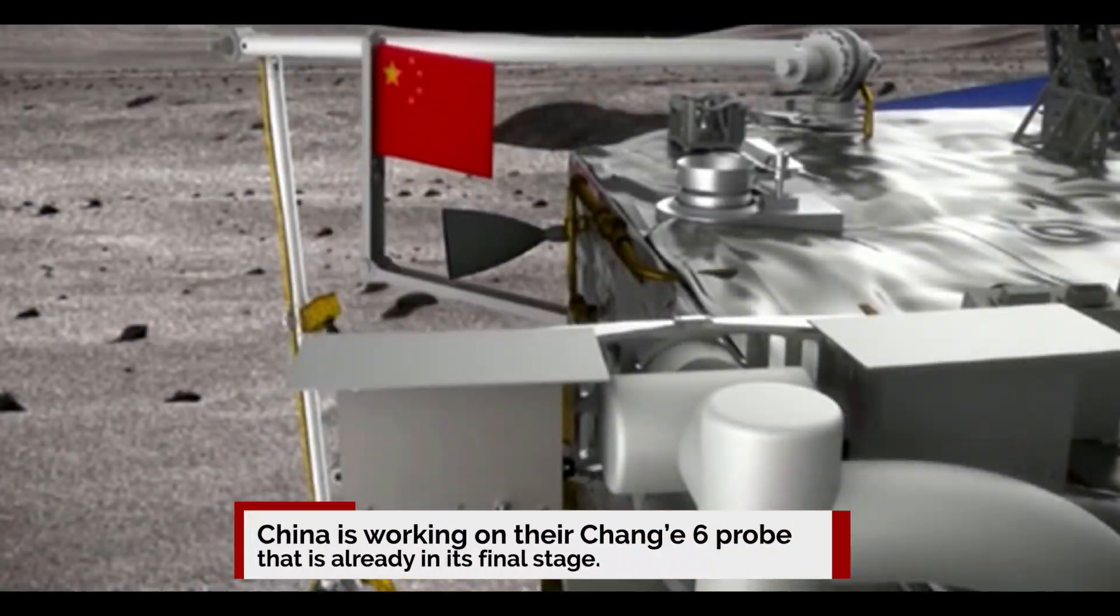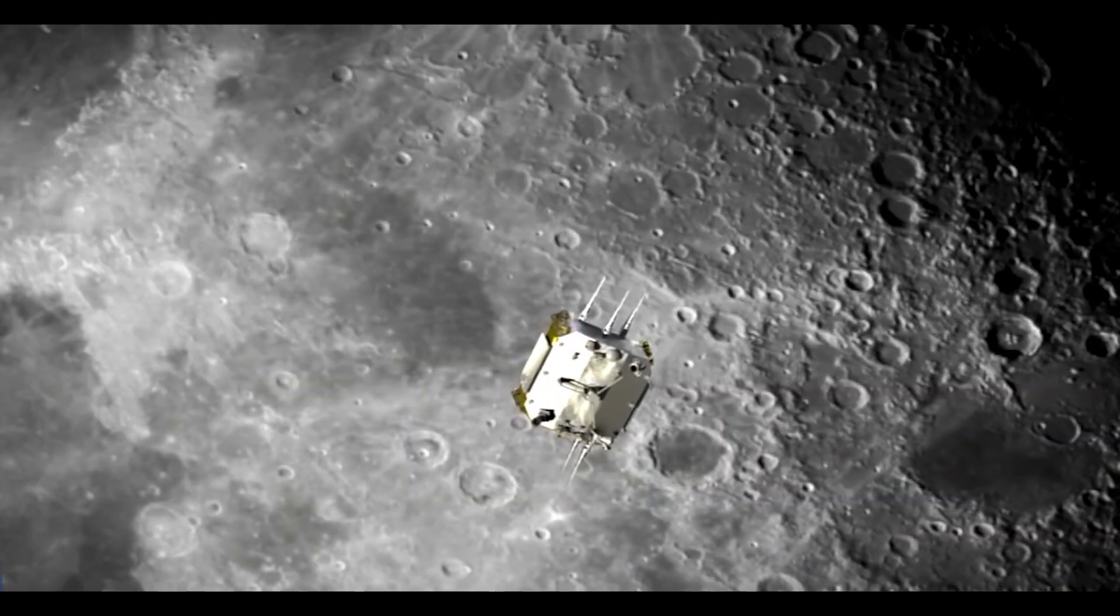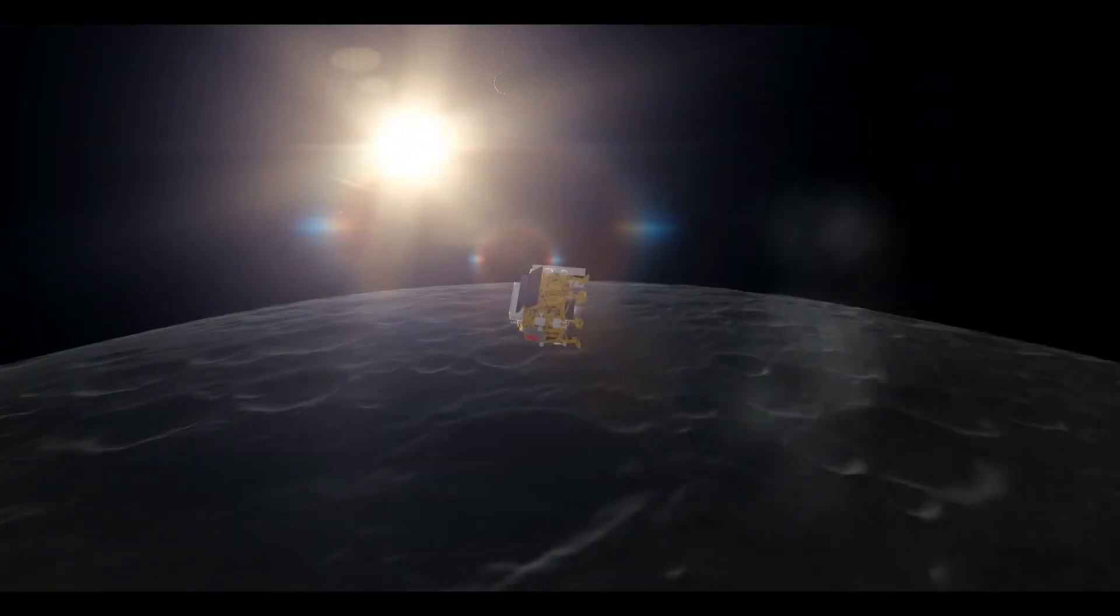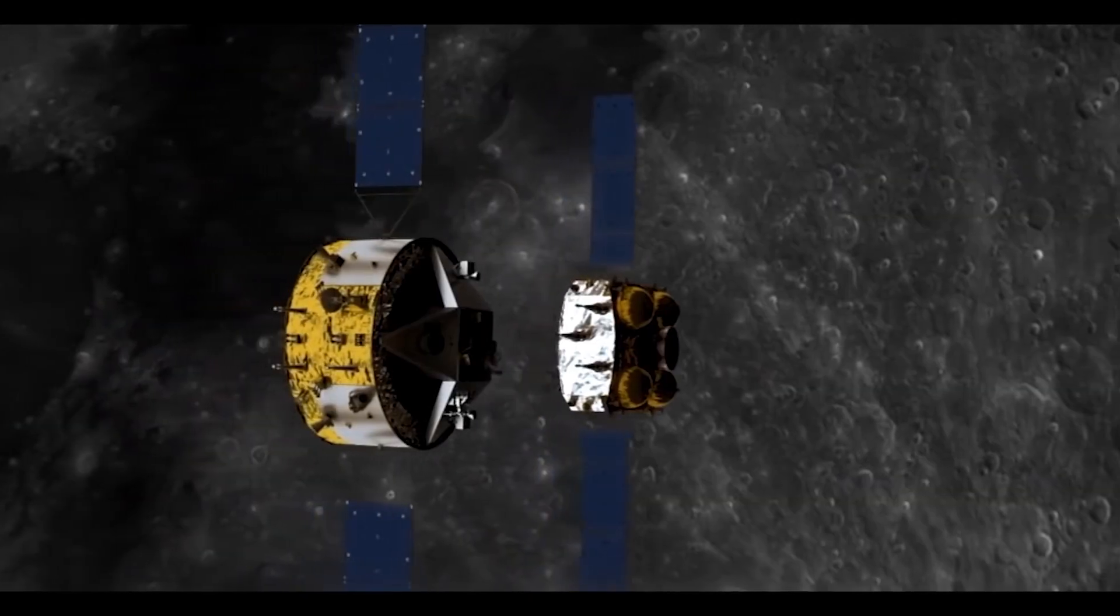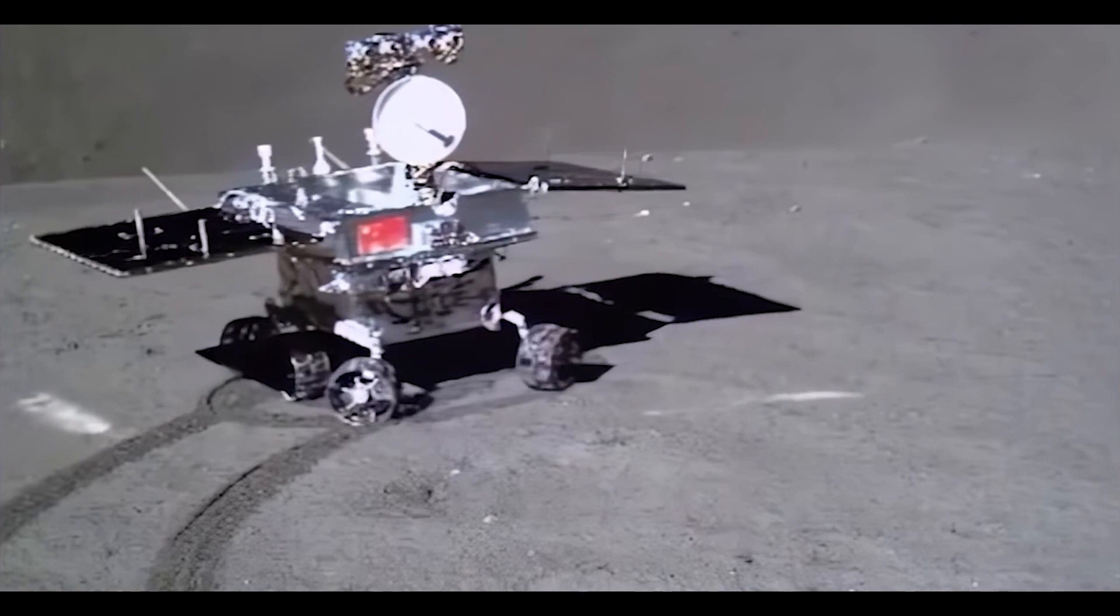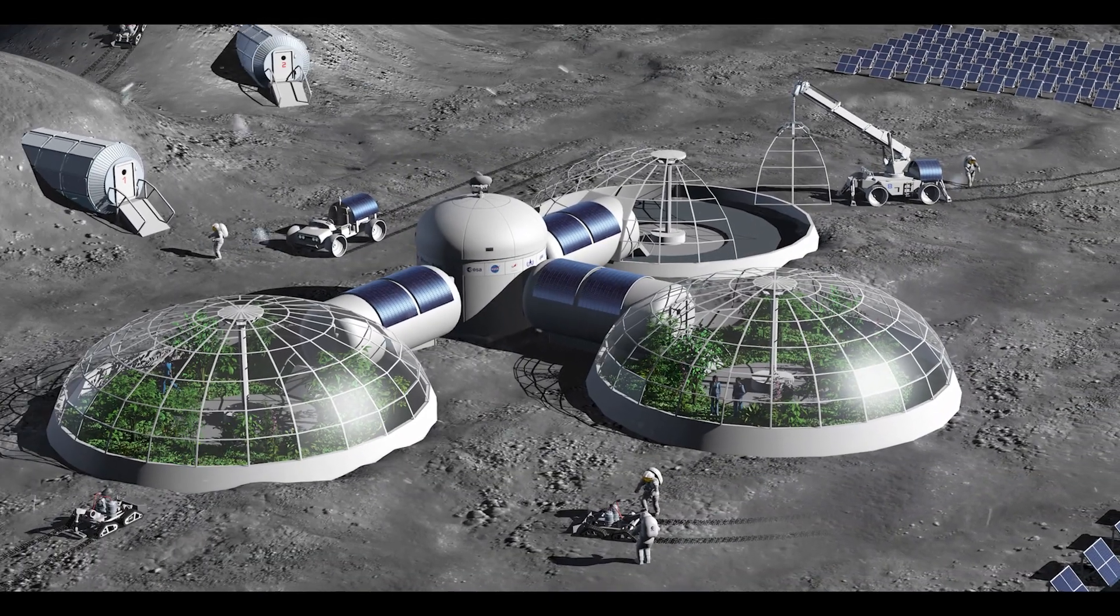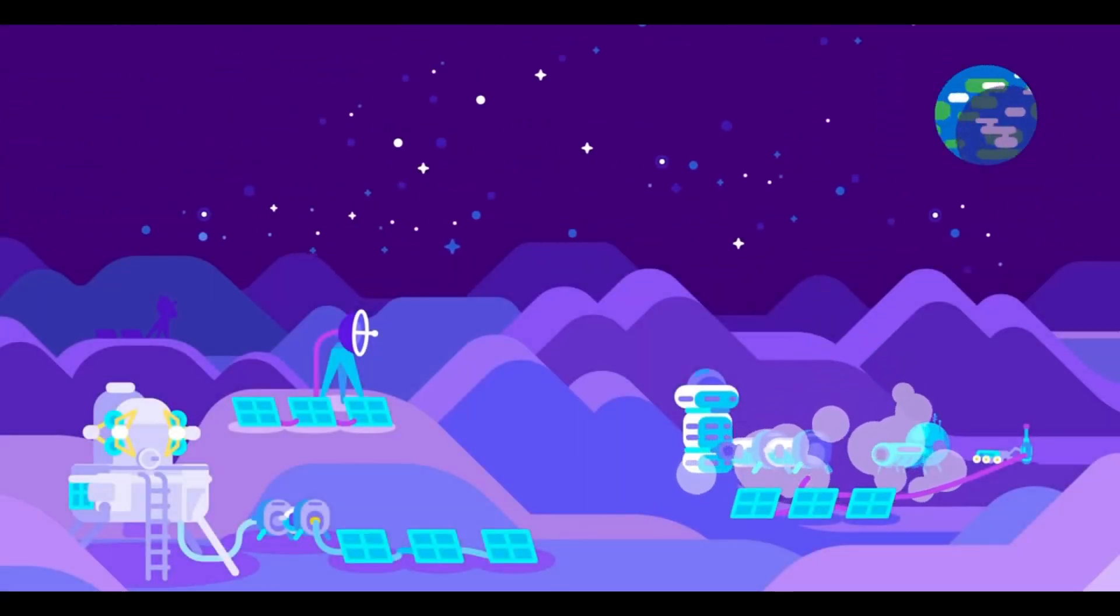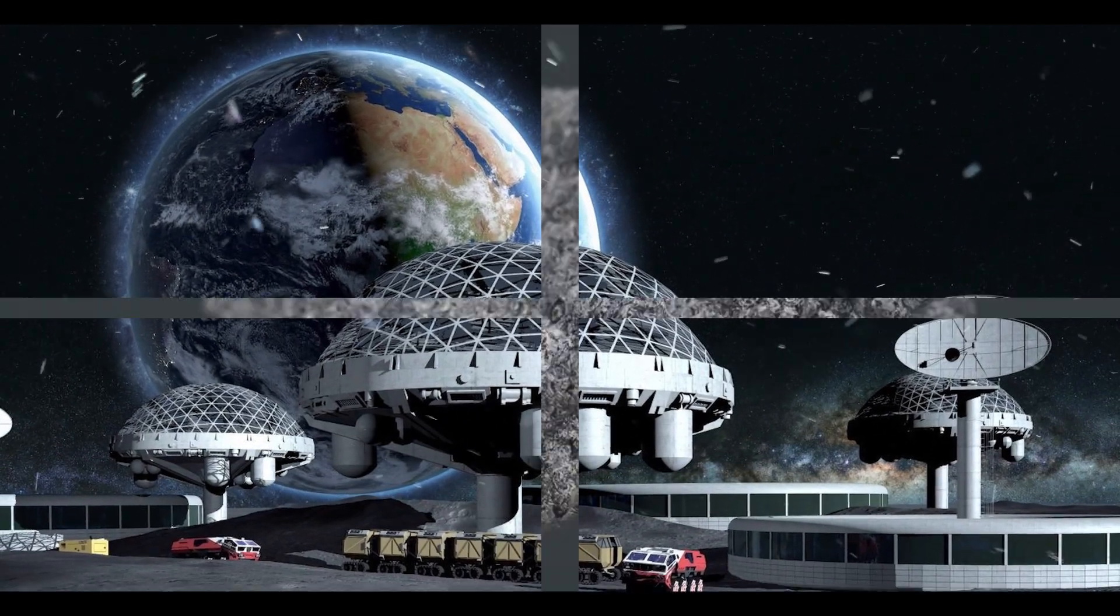China is working on their Chang'e-6 probe that is already in its final stage. The Chang'e-5 already went to the far side of the moon for the very first time and the 6th iteration is here to understand the moon even better by retrieving samples from the far side of the moon and returning them to Earth. The new phase of lunar exploration: China will have a lunar base on the moon in the upcoming decades for research purposes. With the new lunar base by China, we might be able to know more about the lunar surface and its history, whether it was once part of the Earth or not.